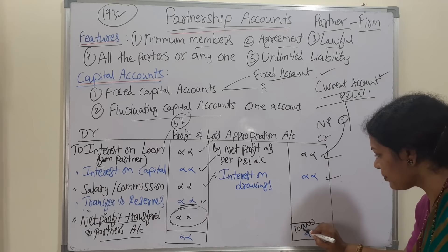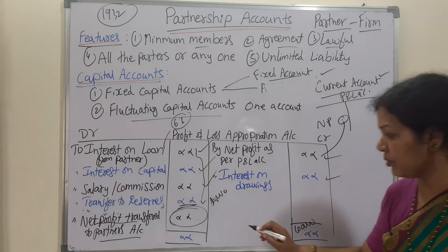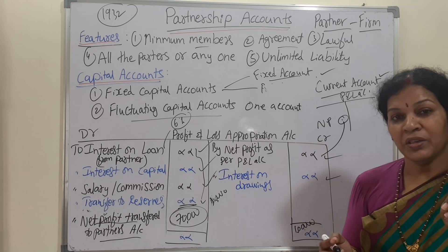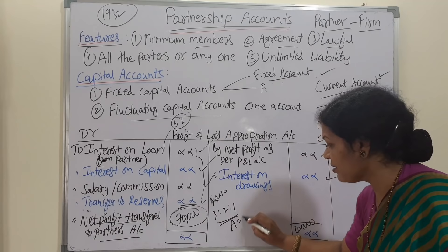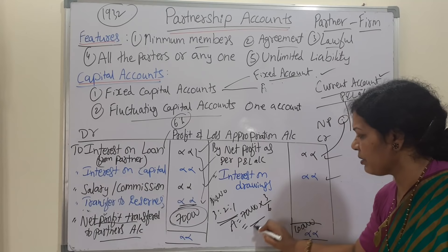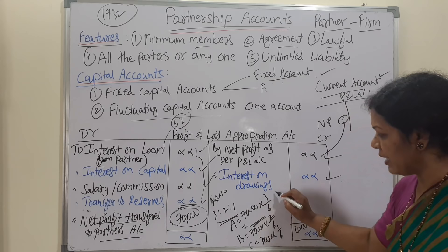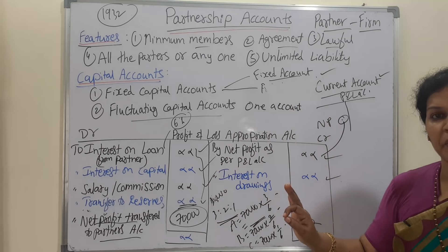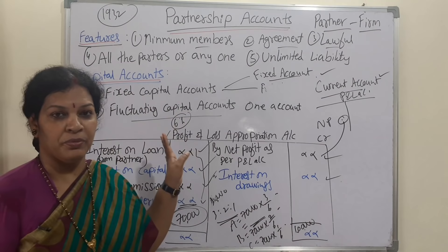For example, if the credit side total is one lakh and debit side adjustments come to thirty thousand, net profit is seventy thousand. For partner A: 70,000 × 3/6; for partner B: 70,000 × 2/6; and for partner C: 70,000 × 1/6. Whatever amount each gets is credited to their respective capital accounts. Once you prepare the P&L Appropriation Account, you can easily prepare the partners' capital accounts using either the fixed or fluctuating capital method.